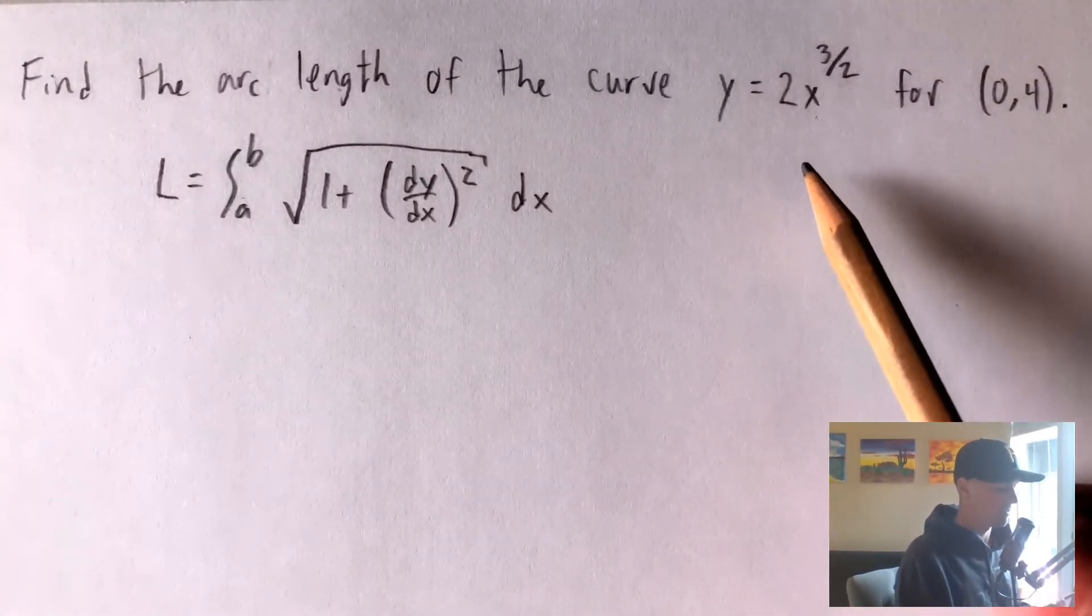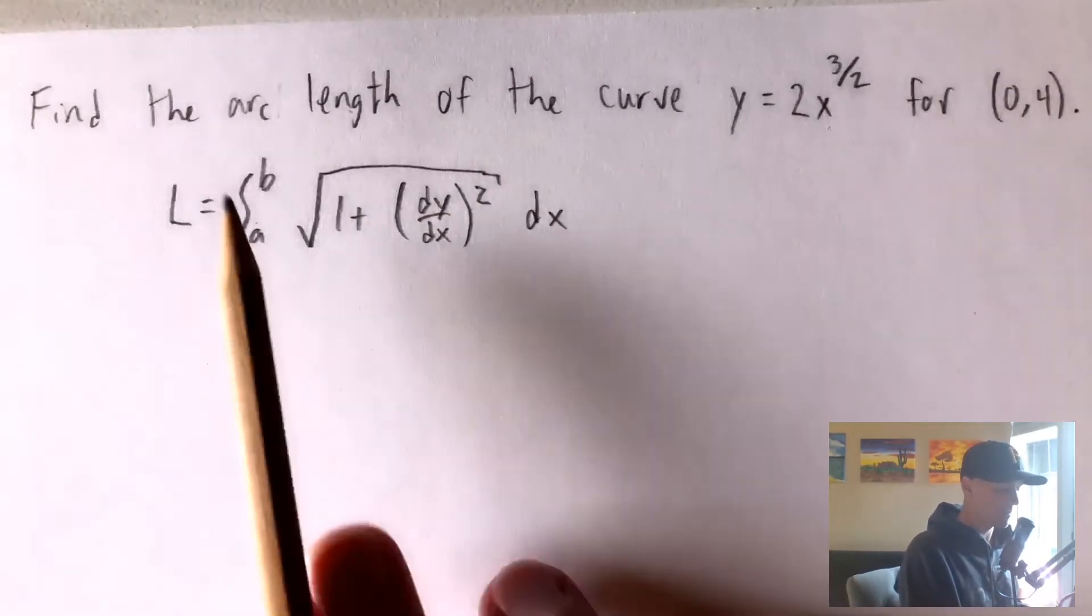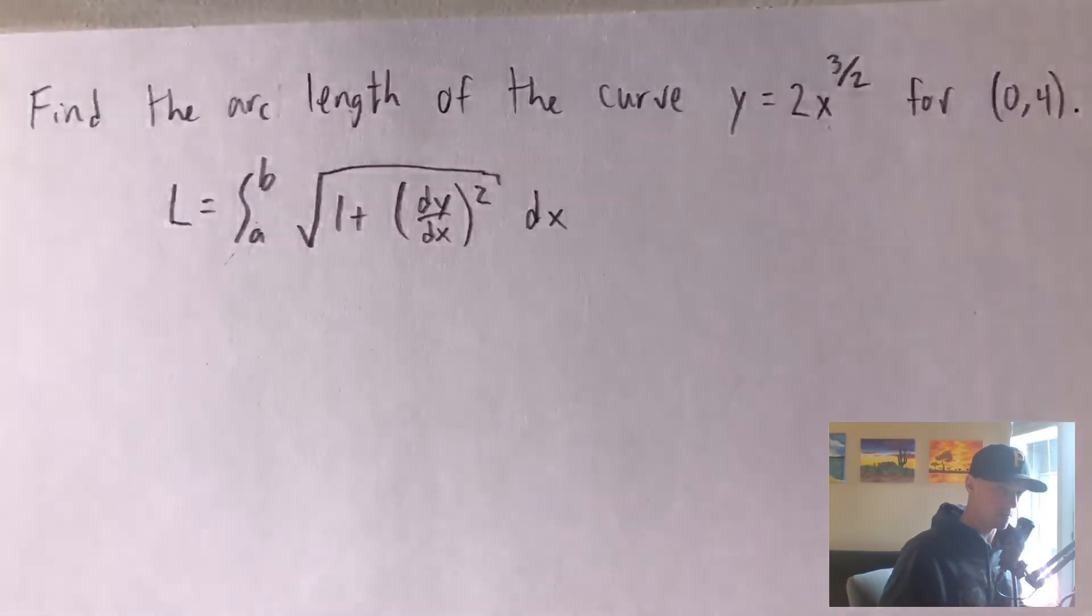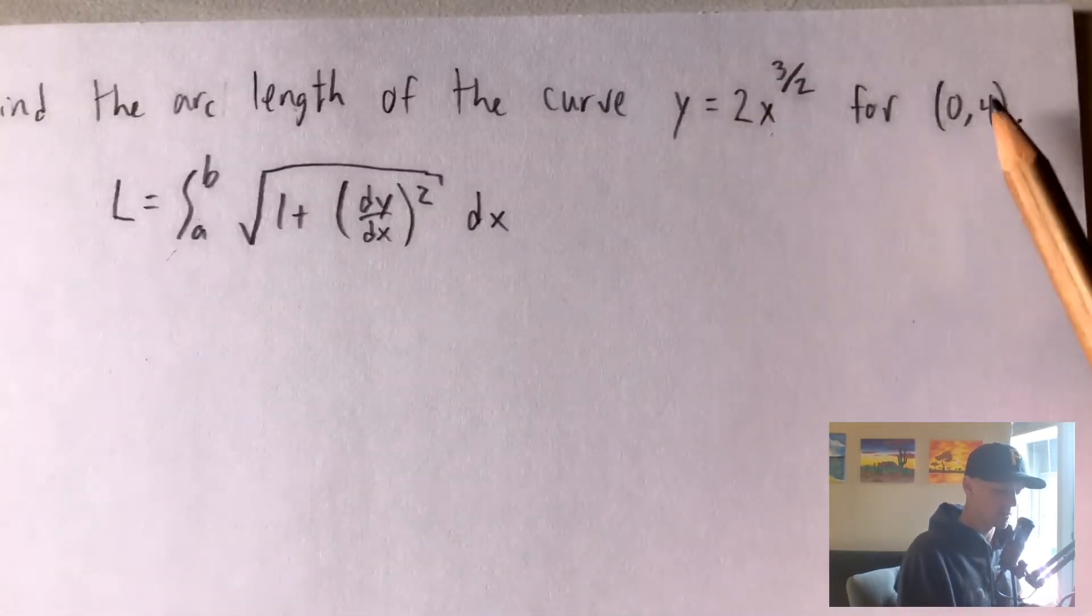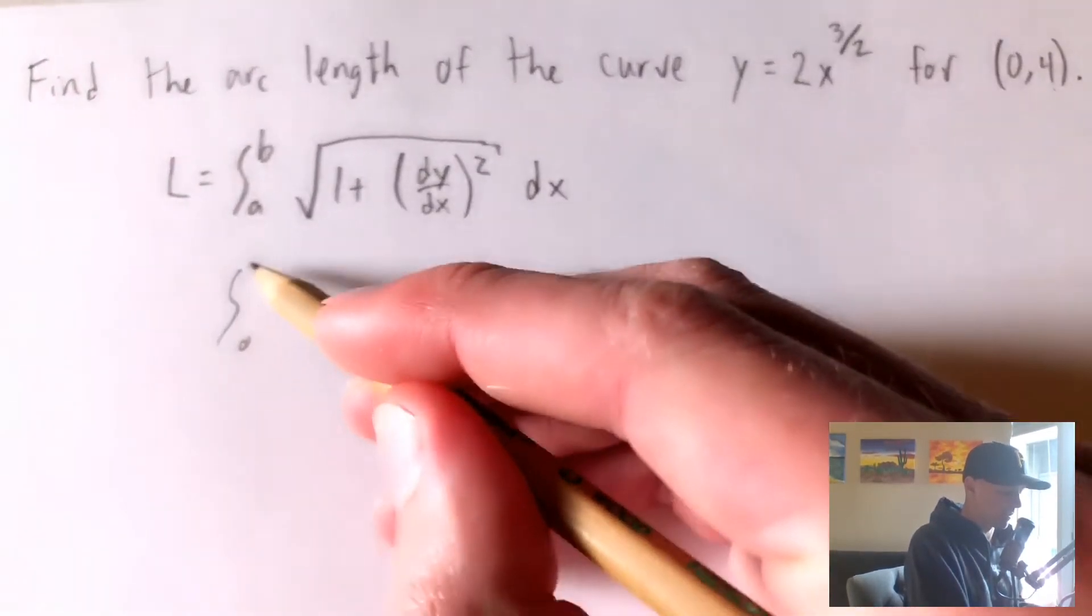So you can see, really this formula, it just has the integral from a to b, where those are the x values that you want to find the arc length of this function over. In this case, it's going to be 0 to 4. So we already know that the bounds of our integral are going to be 0 to 4.